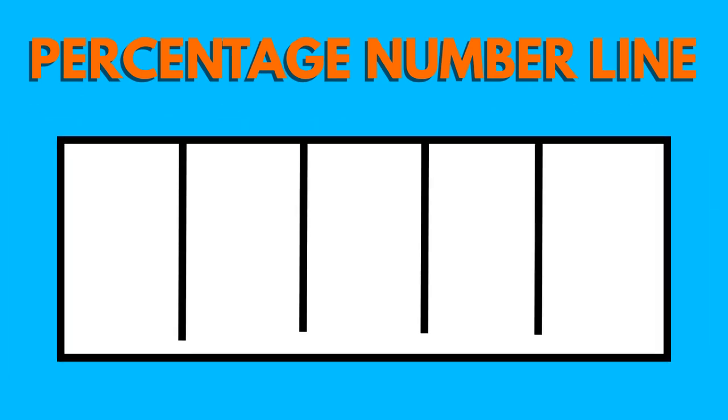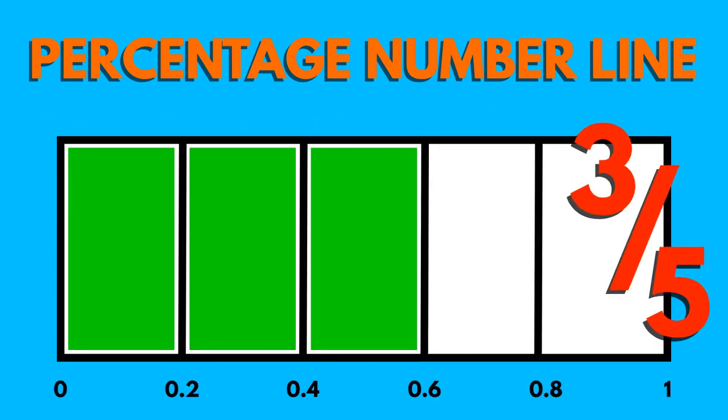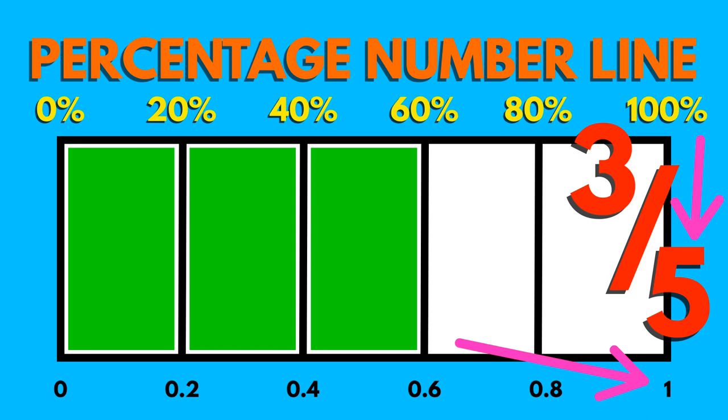We draw the fraction bar first, then put on the decimal increments by dividing 1 by the denominator. Finally, we can show the percentages by dividing 100 by the denominator.